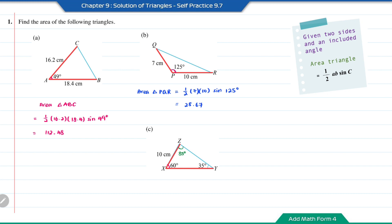This 85 degrees is opposite the length XY, whereas the 10 cm is opposite the 35-degree angle. Using the sine rule: XY over sin 85° equals 10 over sin 35°. So XY equals 10 over sin 35° times sin 85°, which equals 17.37.